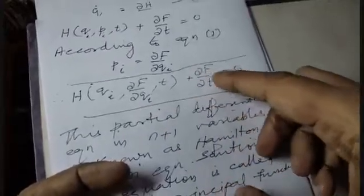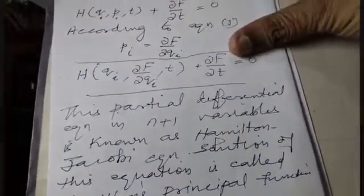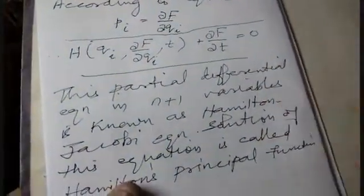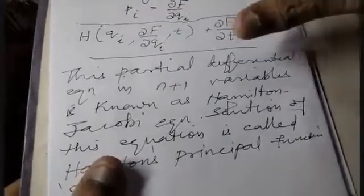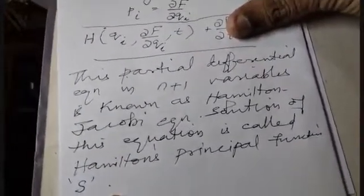Equation 3: H(qi, pi, t) + ∂F/∂t = 0. With Pi equals ∂F/∂qi, substituting gives H(qi, ∂F/∂qi, t) + ∂F/∂t = 0. This is a partial differential equation in n+1 variables — i equals 1 to n, plus t. This is known as the Hamilton-Jacobi equation, and its solution is called Hamilton's principal function S.